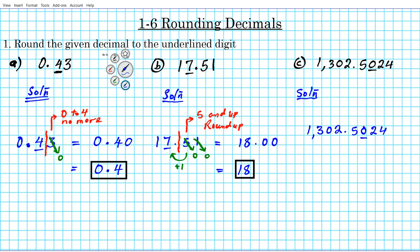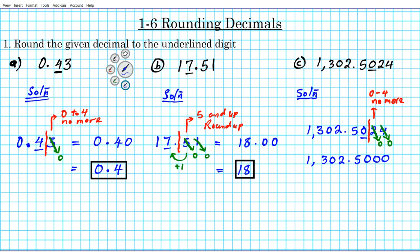Since this is the digit we're rounding to, following the steps, we put a partition there and take a look at the digit to the right. The digit to the right is 2 — that's 0 to 4, no more. We're not going to round up. We simply set all the digits to the right of this digit to zero — set this to zero, set that to zero. So we have 1,302.50. Since it was no more, the zero stays. The other digits to the right also become zeros. The last zero digits to the right of the decimal point do not need to be written, so this just becomes 1,302.5.